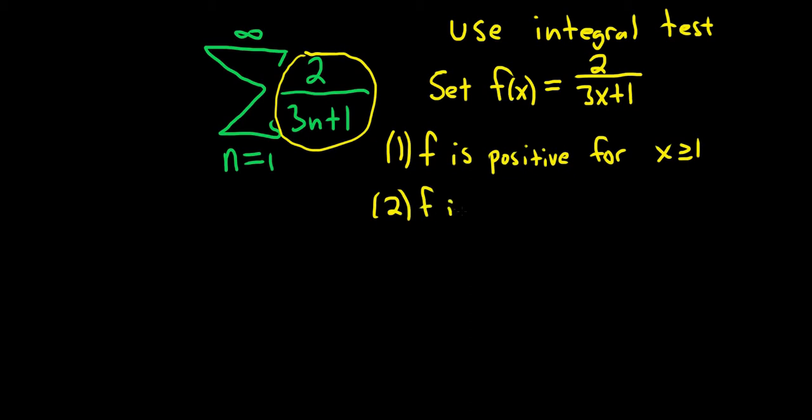f is continuous for x greater than or equal to one. And again this just requires some visual inspection. There is a discontinuity here at negative one-third. If you set this equal to zero and solve for x there's an issue there. So it's not continuous there but we only care about x greater than or equal to one. So things are good.